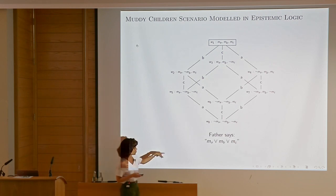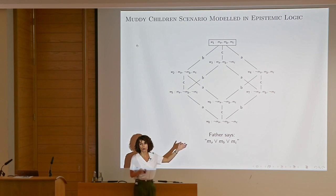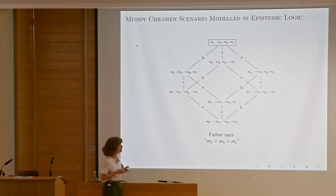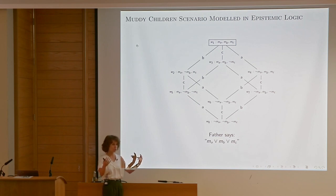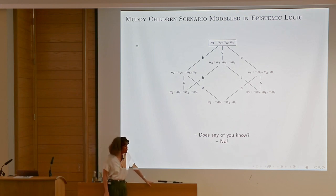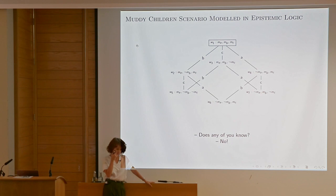Before the announcement, this is what it looks like. Now the father comes and says 'at least one of you has mud on your forehead' — MA or MB or MC in logic. What should happen to the model? We talked about learning and eliminating possibilities. W_∅ — the world where no child is muddy — should die. It should die because the announcement is made to all kids simultaneously and they all hear that others hear. So all of them can eliminate this world from their uncertainties.